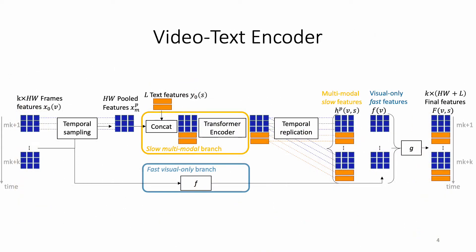Our video-text encoder includes two branches. The slow multimodal branch samples video features from one every k frames for efficiency. Then it computes detailed spatial and visual-linguistic interactions over the sparsely sampled features with a transformer encoder.